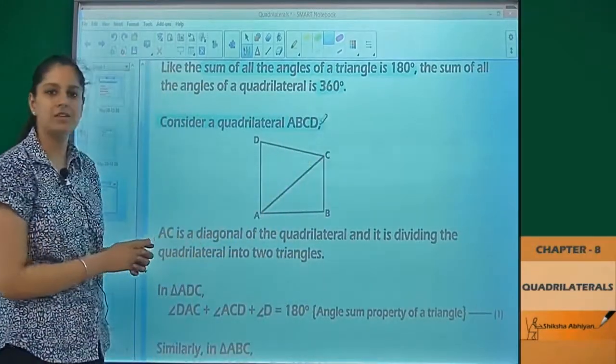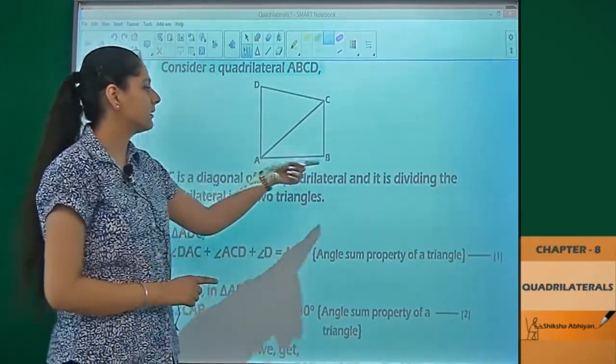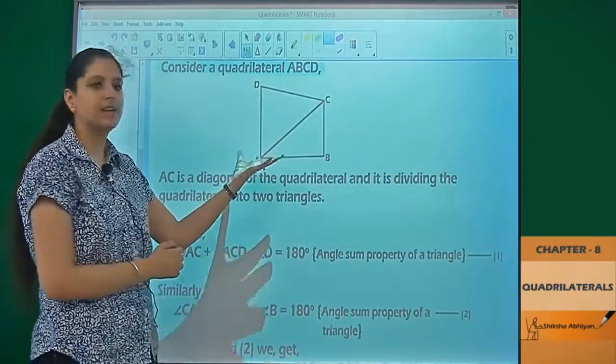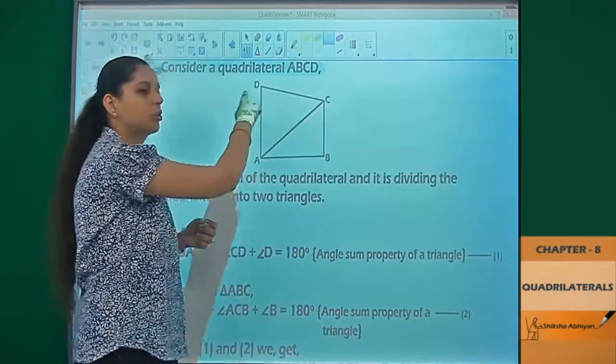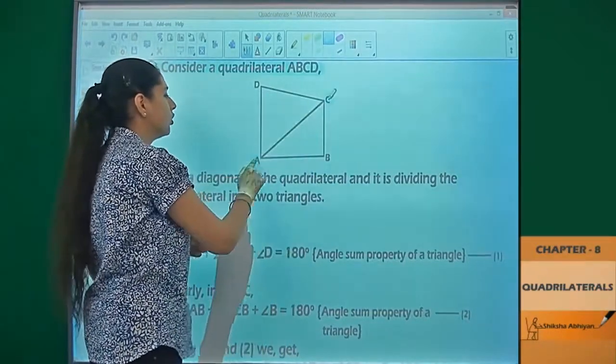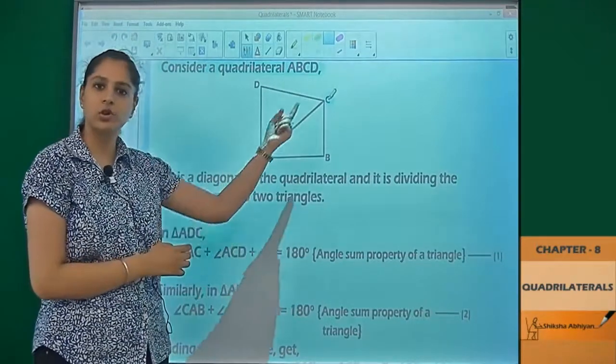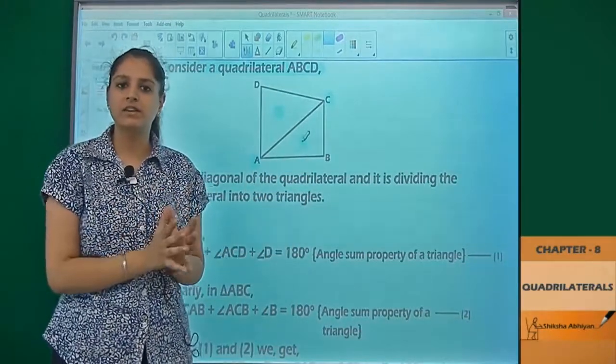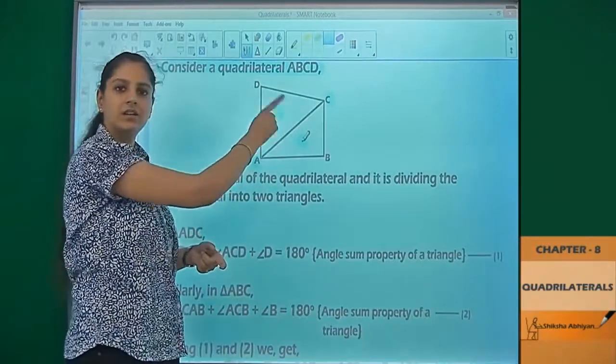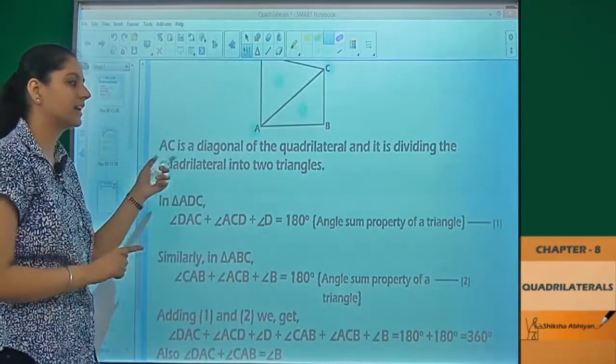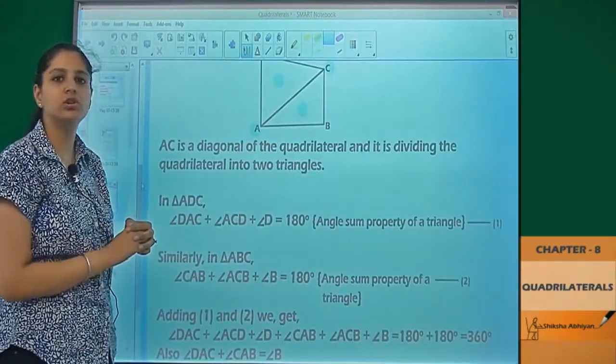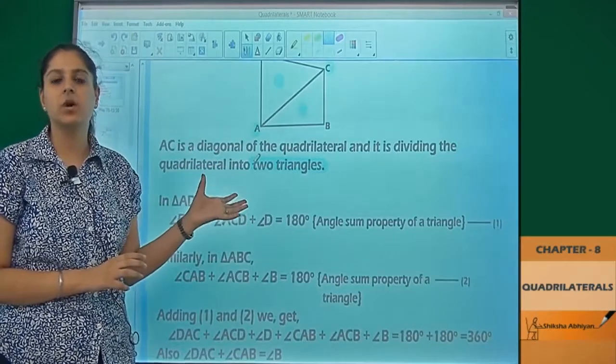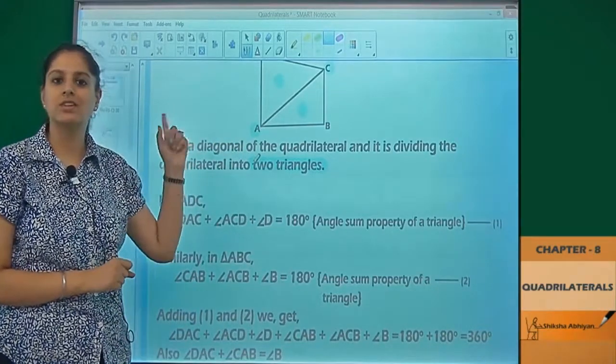We are considering a quadrilateral ABCD. This is ABCD. AC is the diagonal of this quadrilateral. Easily, you can see this is a four-sided closed figure. If I join these two vertices A and C, then AC is dividing it into one triangle and another triangle. That means a quadrilateral is divided by a line into two different triangles. AC is the diagonal of the quadrilateral and it is dividing it into two triangles. The first thing we observe is that one diagonal of a quadrilateral is dividing it into two parts, which are two triangles.